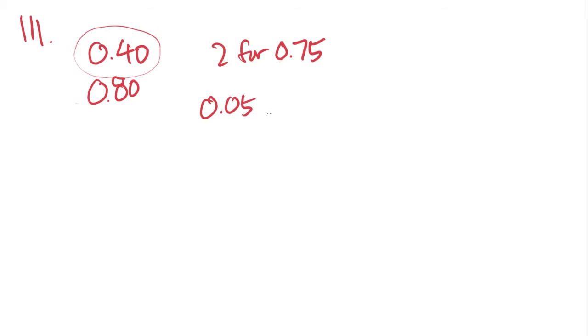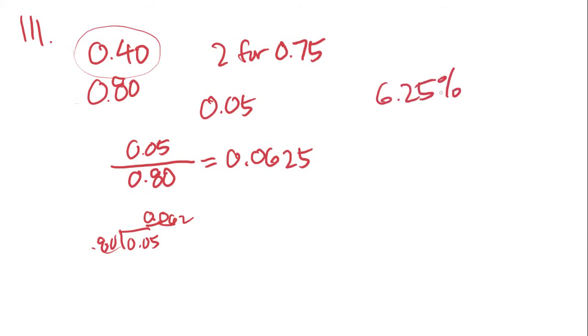Let me think if there's a different way we can do this. Let's just keep doing it this way. 5 cents over 80 cents equals... that is going to be 6.25%, which is 6 and a fourth percent. That is answer choice B.